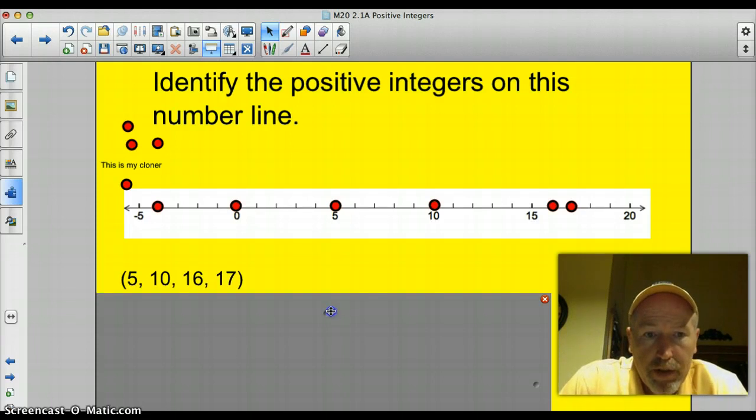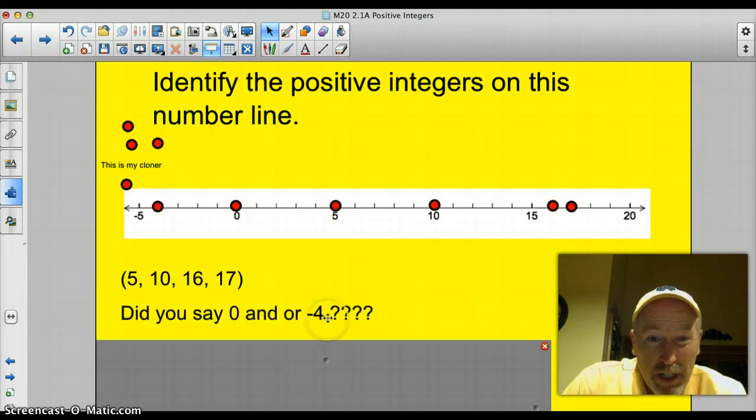Alright. If you did it correctly, you would have said 5, 10, 16, and 17. Did it get you to say zero or negative four? I hope not because zero is neutral and this is a negative number.